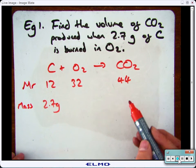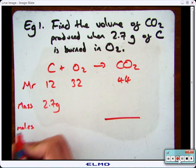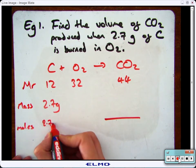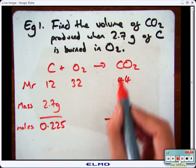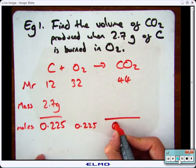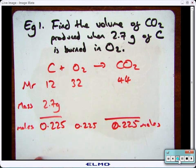Now to work out the volume of carbon dioxide, I need to know the number of moles. So remember, moles equals mass divided by MR, which is 2.7 divided by 12. Now that, because the ratio is 1 to 1 to 1, means I've got 0.225 moles of everything else.